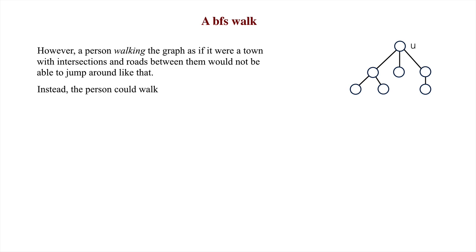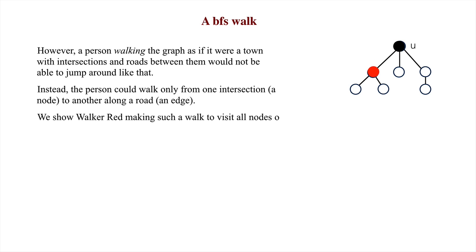Instead, the walker could only walk from one intersection to another along a road. We show walker red making such a walk to visit all nodes of the graph, visiting nodes in BFS order.